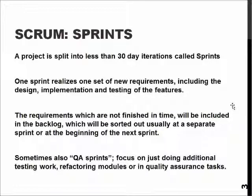Of course, this doesn't always work. We have up to 30 days for each iteration to realize one set of requirements, and that includes all the design, implementation, testing, quality assurance, and integration work. It's sometimes not enough. So we may end up with backlog, meaning we are unable to fulfill all the requirements during the sprint they were planned for. In most Scrum projects in real life, we also have to do separate sprints for sorting out features we didn't have time to complete or to do additional quality assurance work.